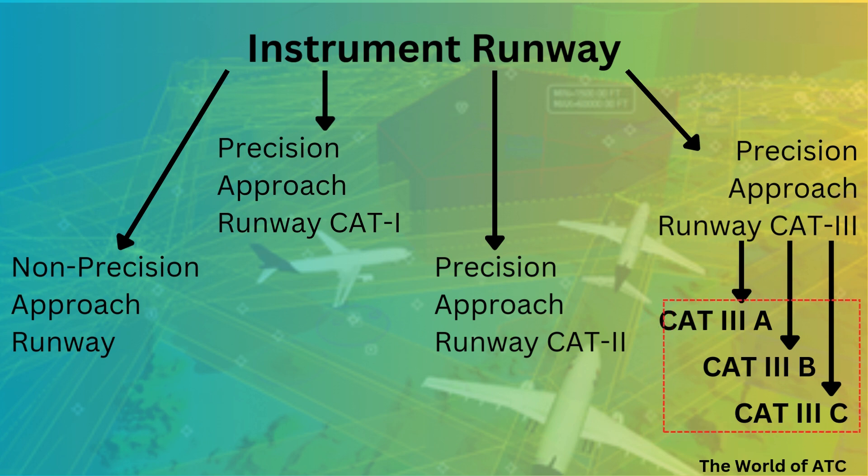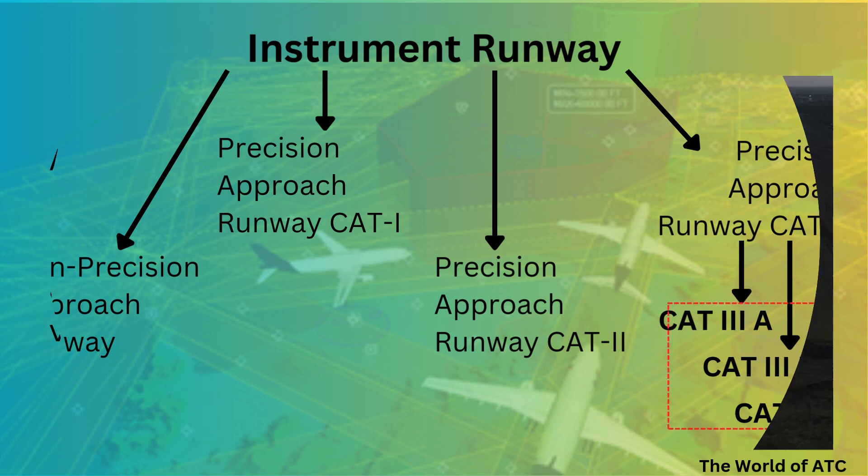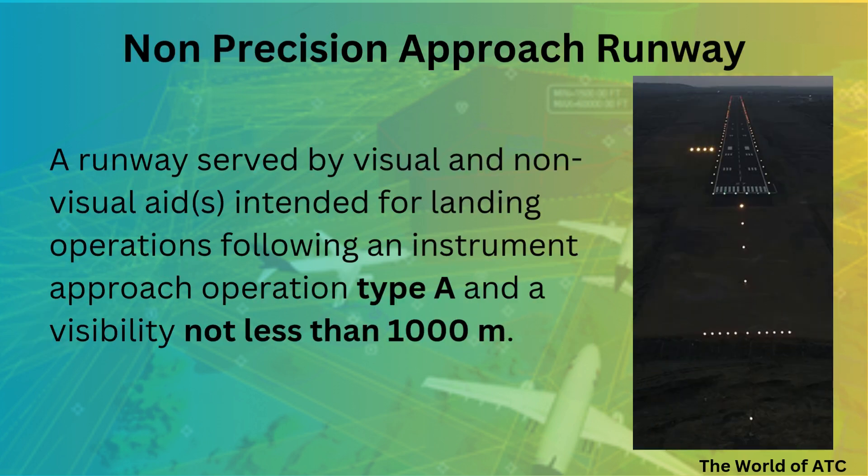Starting with the definition of non-precision approach runway: this is a runway that is served by visual and non-visual aids and intended for landing operations following an instrument approach operation type A, with visibility not less than 1000 meters.